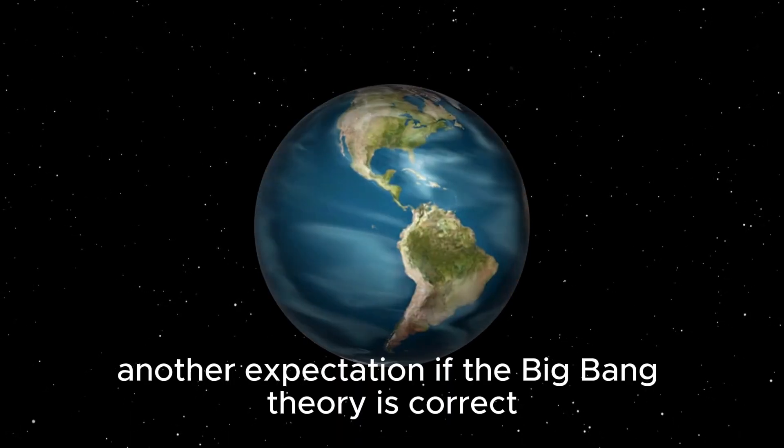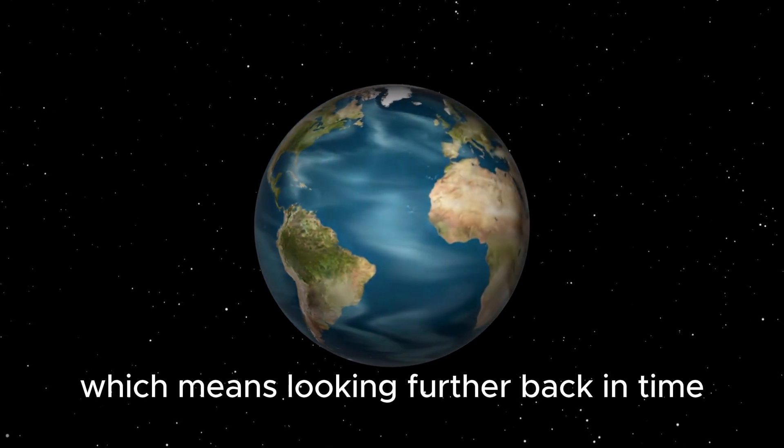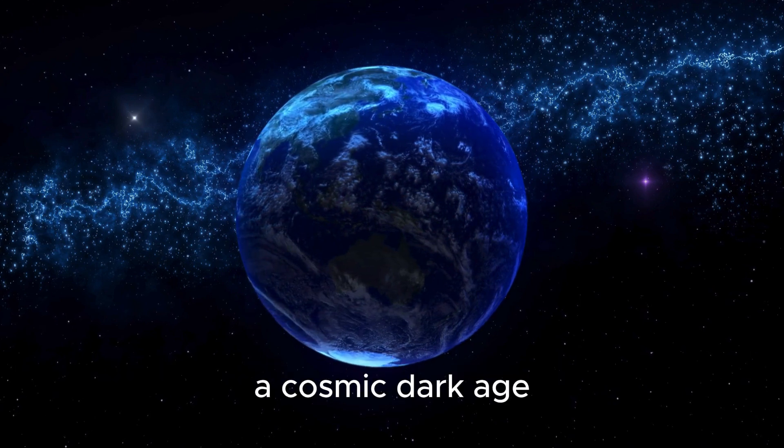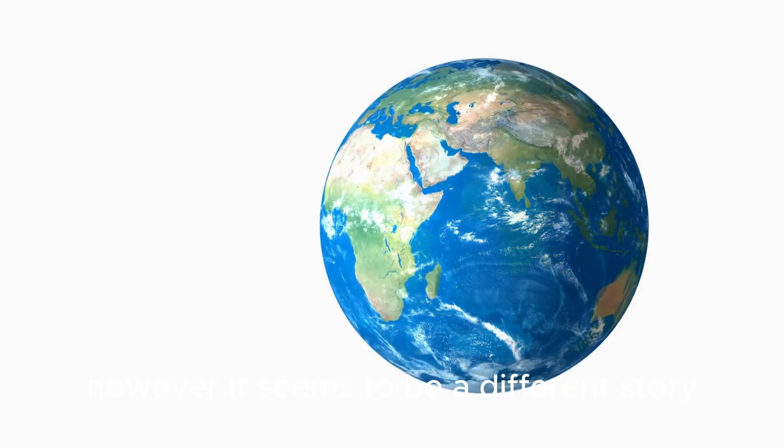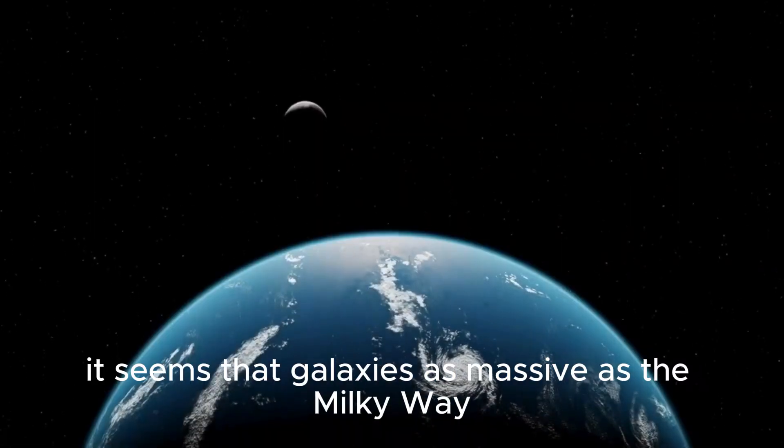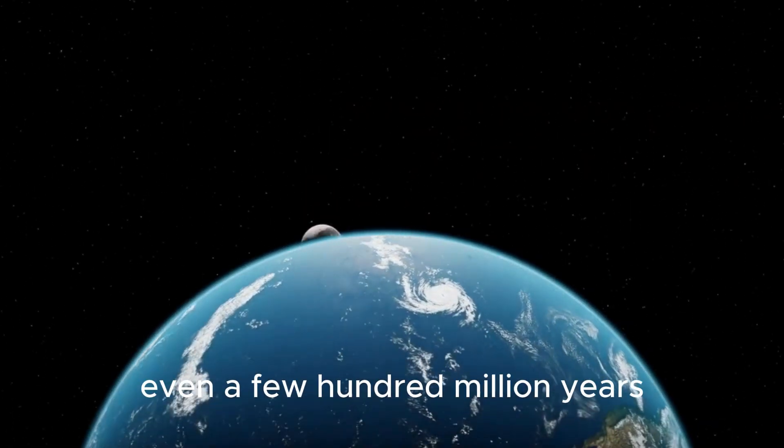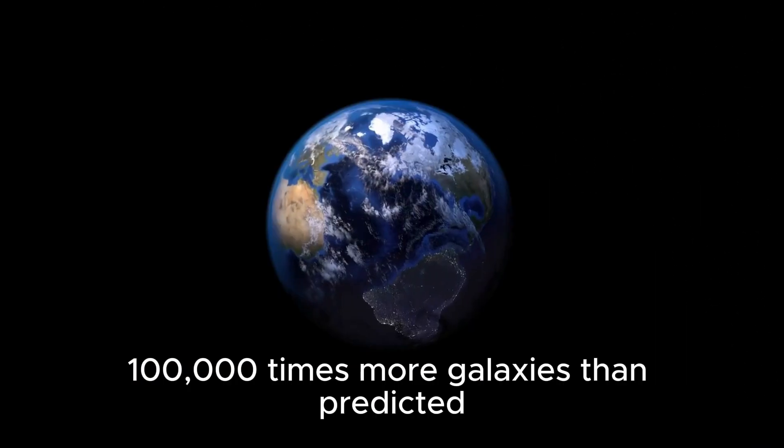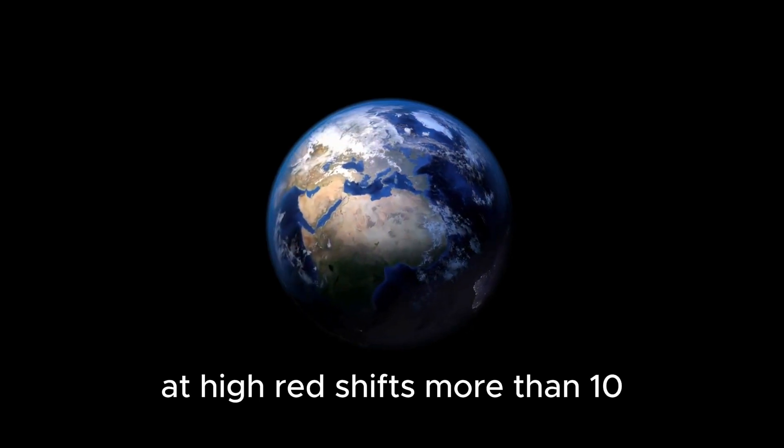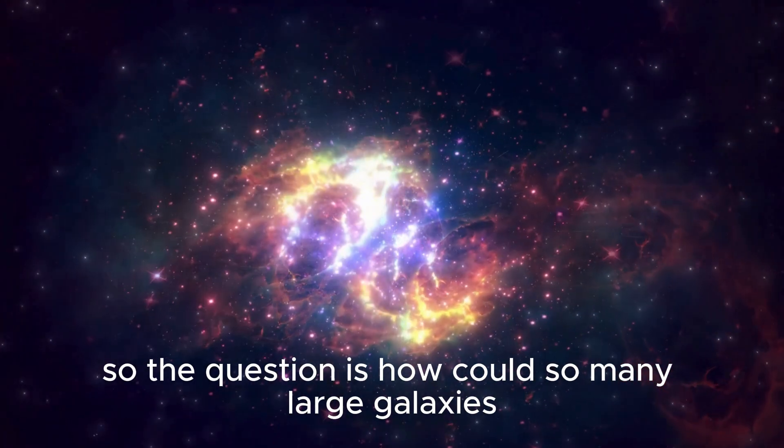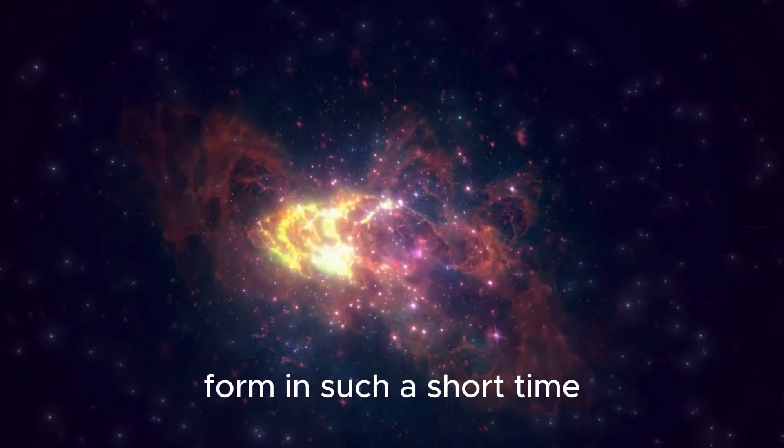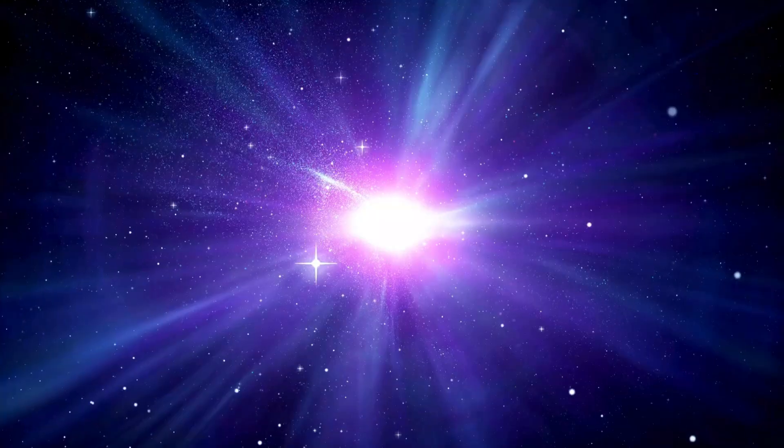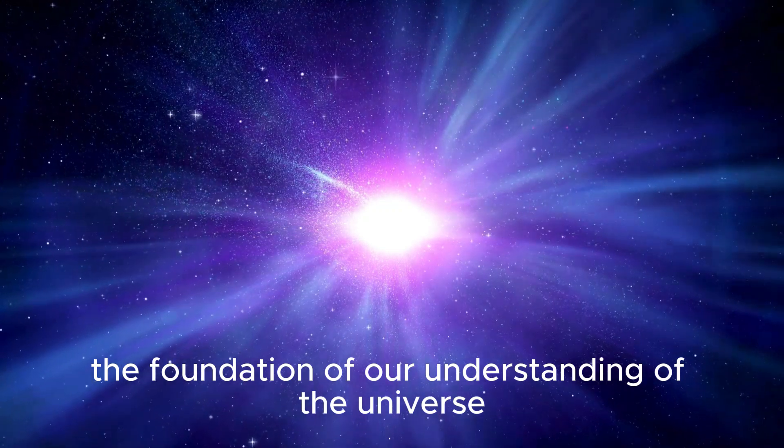Another expectation, if the Big Bang theory is correct, is that as we gaze farther into space, which means looking further back in time, we should see fewer and fewer galaxies until we reach a point where there are none, a cosmic dark age. However, it seems to be a different story. It seems that galaxies as massive as the Milky Way were already pretty common even a few hundred million years after the supposed Big Bang. The new images indicate that there are at least 100,000 times more galaxies than predicted at high redshifts, more than 10. So the question is, how could so many large galaxies form in such a short time? The answer is they probably couldn't, at least not under the constraints of the Big Bang theory.